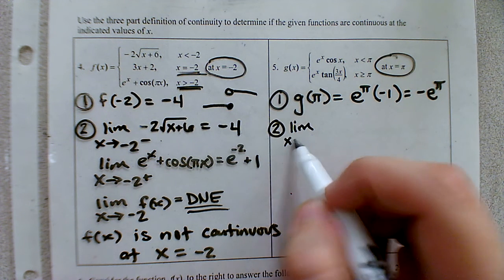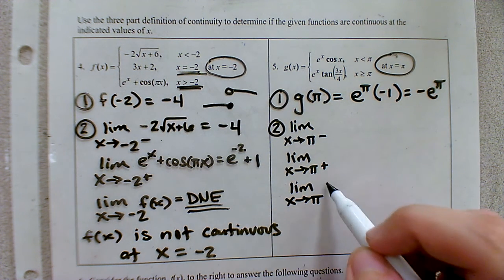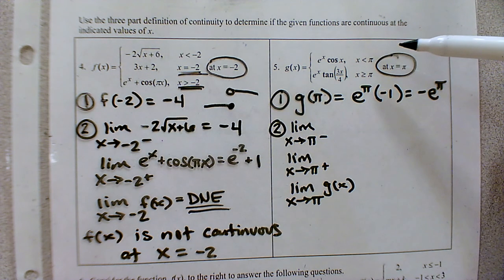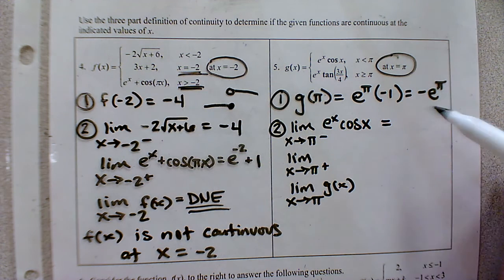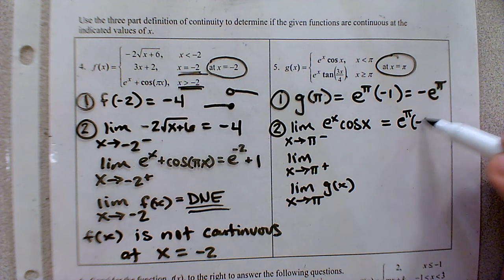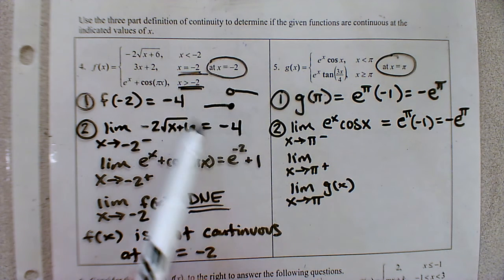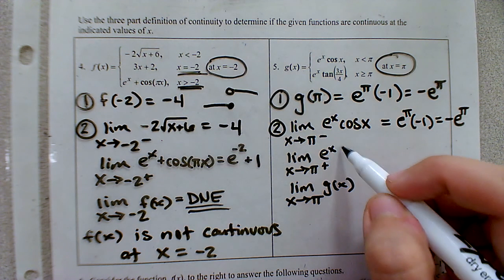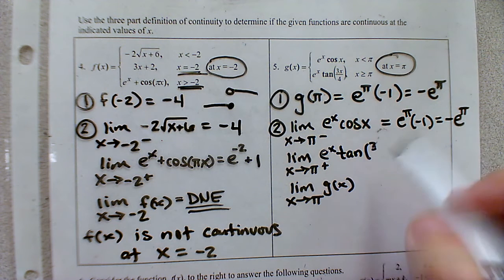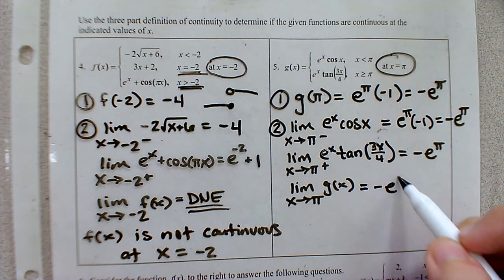Now let's check the limit. As we approach pi from the left, values smaller than pi satisfy the first domain, so we use the first equation. Direct substitution gives e to the pi times cosine of pi, and cosine of pi is negative one, so the left-hand limit is negative e to the pi. For the right-hand side of pi, we use the second equation — the same calculation we already did for the point value — giving us the same result. The left and right limits both equal negative e to the pi, so the overall limit is negative e to the pi.